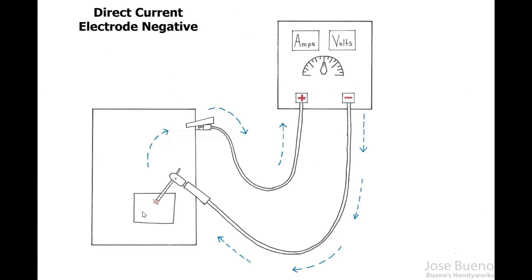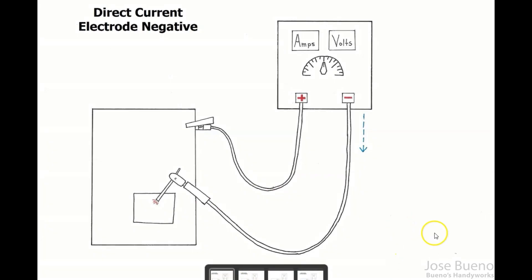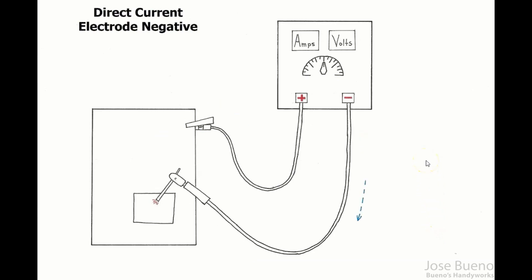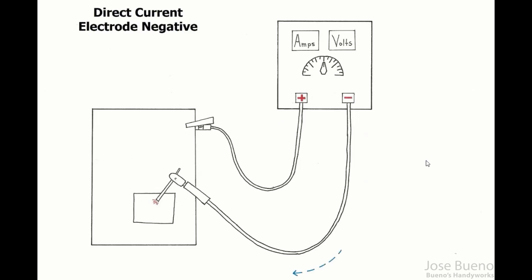We'll get into more about how DC EP and DC EN affect the weld in a later video. If I click over to a different frame, you can see the arrow is traveling along the same path that our current takes as it travels from the welding machine into the electrode cable, through the welding arc, back into the ground cable, and returns to the welding machine.